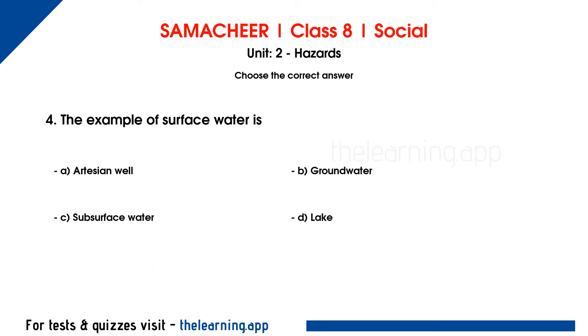Fourth question: the example of surface water is dash. Options are A, Artesian well; B, groundwater; C, subsurface water; D, lake. The correct answer is option D, lake.